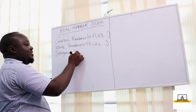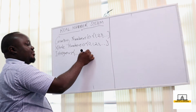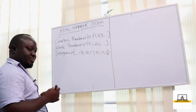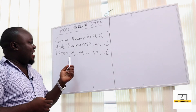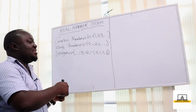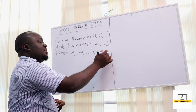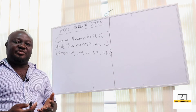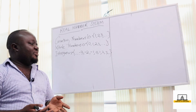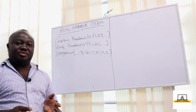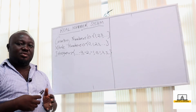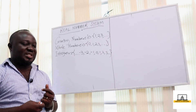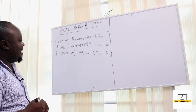Integers are negative and positive whole numbers which include 0. So we have negative 3, negative 2, negative 1, 0, 1, 2, 3 to infinity. Integers are just negative whole numbers and positive whole numbers including 0, and they run from negative infinity to positive infinity.